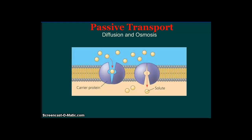Sometimes passive transport involves a protein that is designed to carry a specific molecule. In this case, the molecule fits into a carrier protein that is embedded in the membrane. But again, the molecule is moving from high concentration to low concentration, and even though the carrier protein is changing shape and moving, this does not require energy.